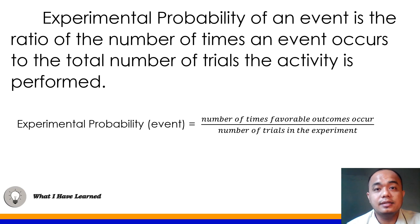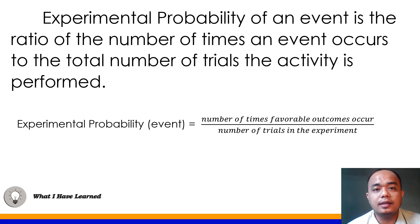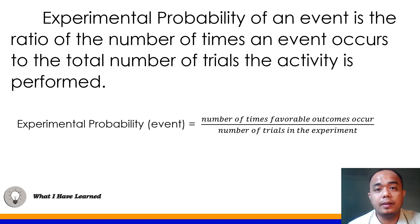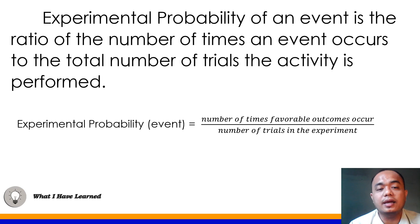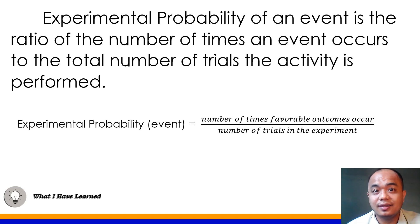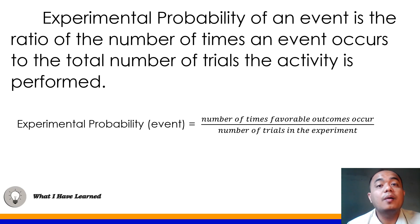For example, when you flip a coin — if asked for the experimental probability of getting heads if it is flipped 20 times, and heads came up 11 times, then 11 would be the number of times the favorable outcome occurred over 20 trials. So the experimental probability is 11 over 20. Experimental probability is based on actual results from the experiment.